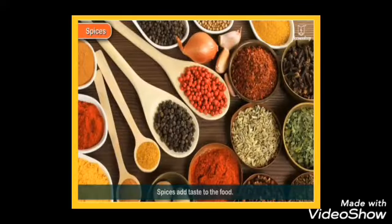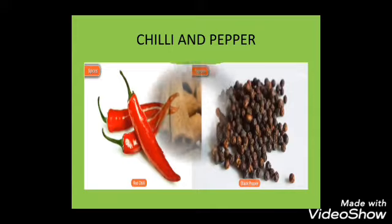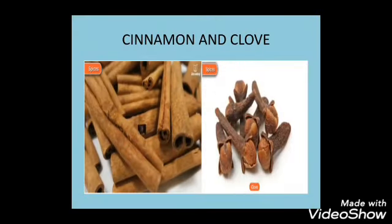Children, we like eating tasty food like pav bhaji and biryani. Different spices are added to it. We get spices like red chili, black pepper, cinnamon, clove and many more from different parts of plants. These spices add taste and flavor to food.